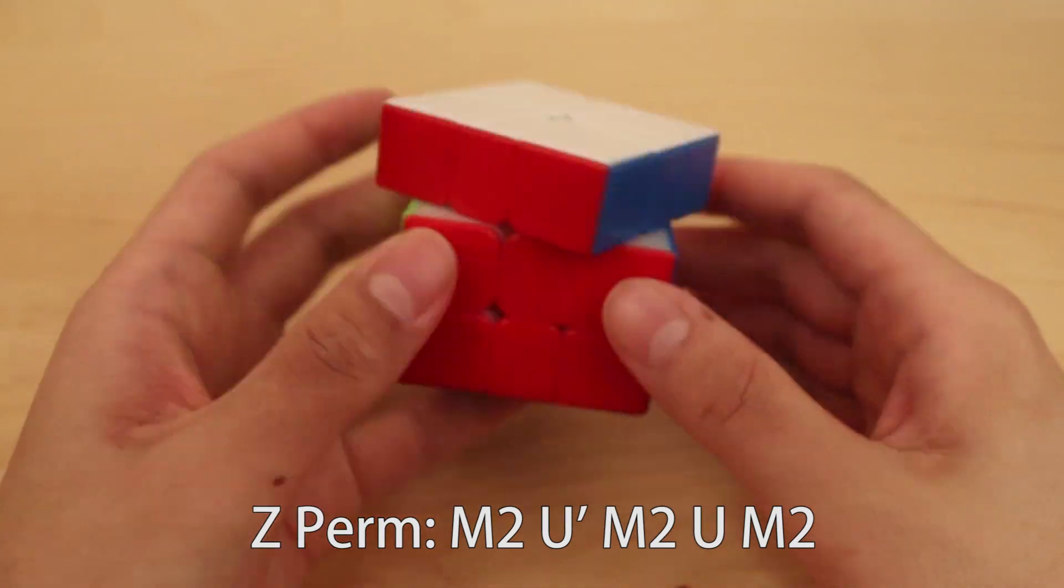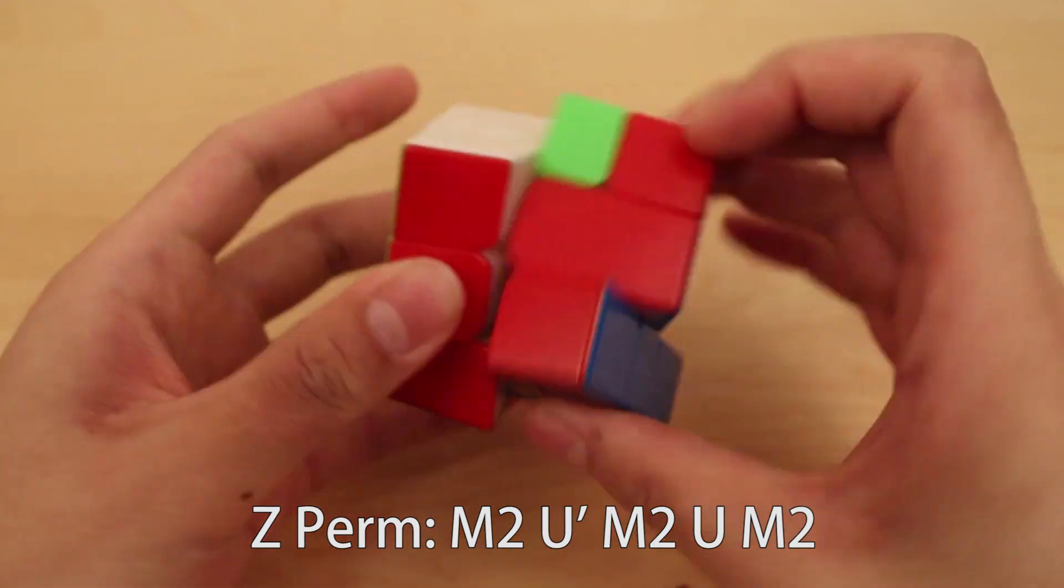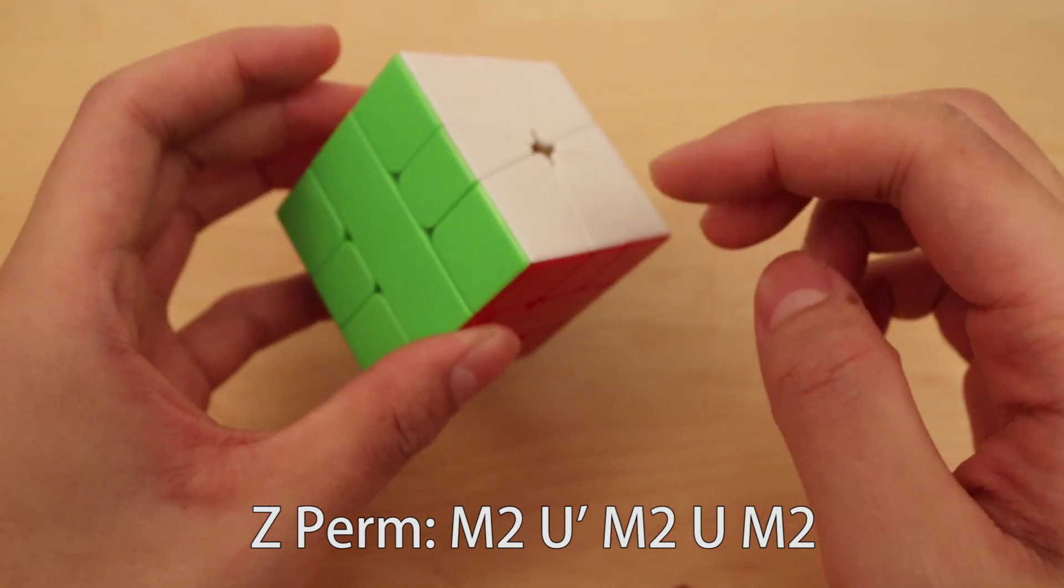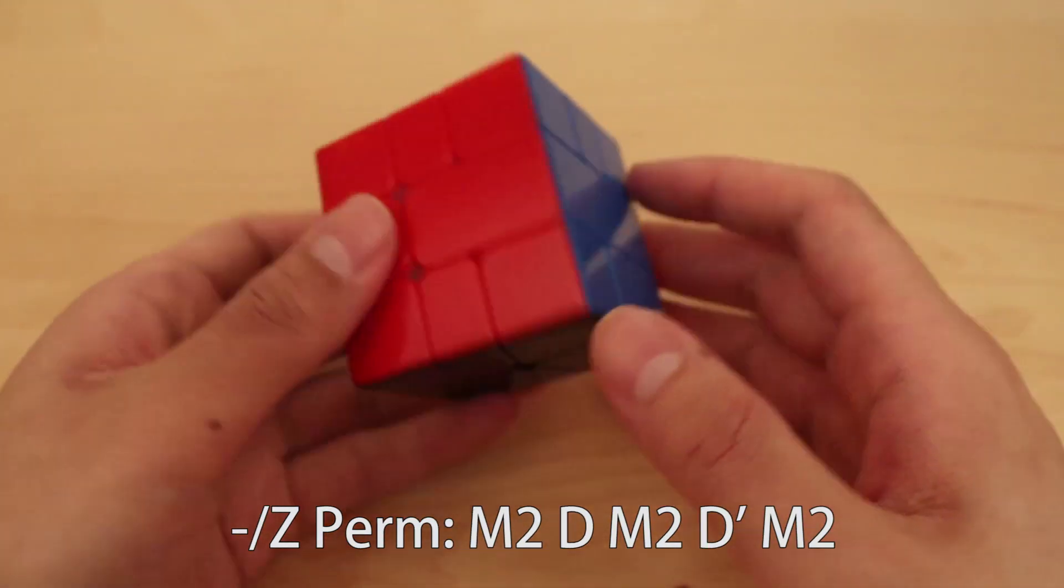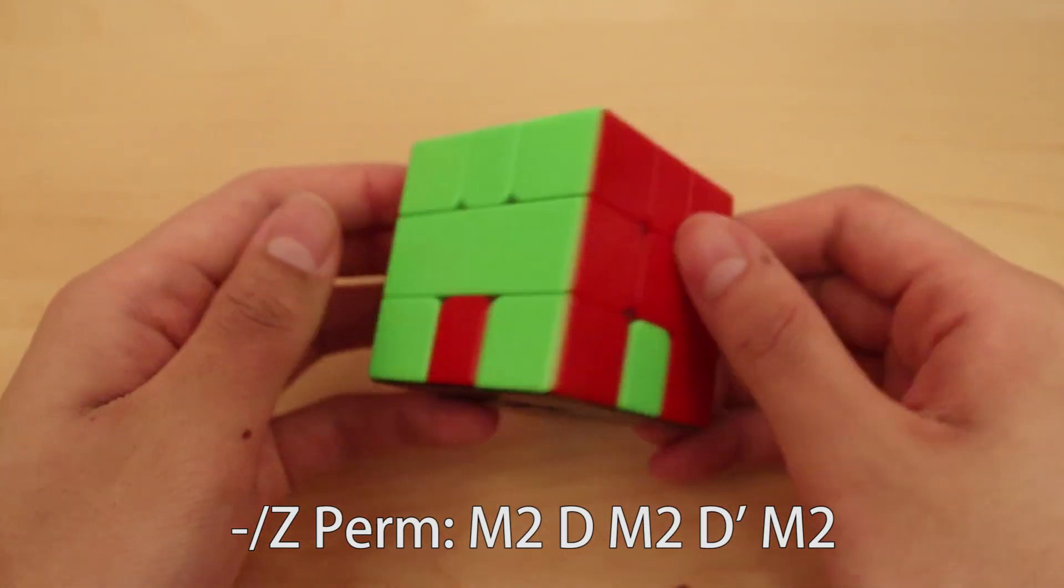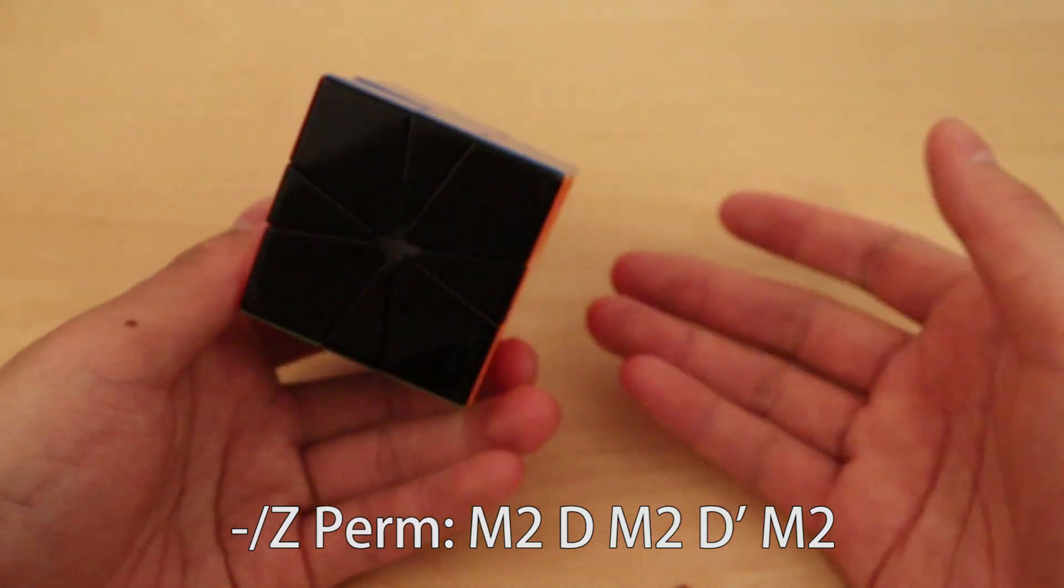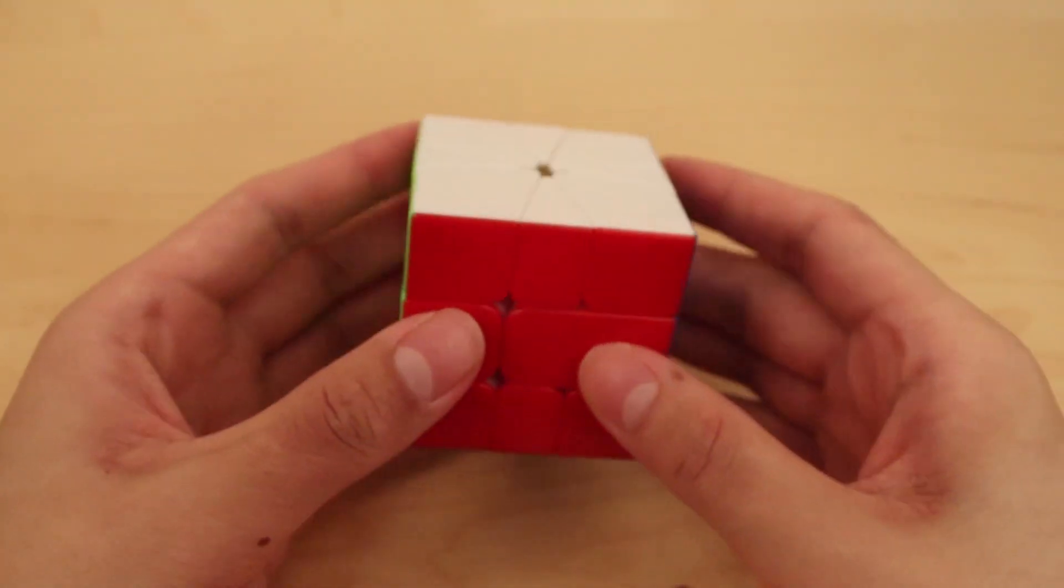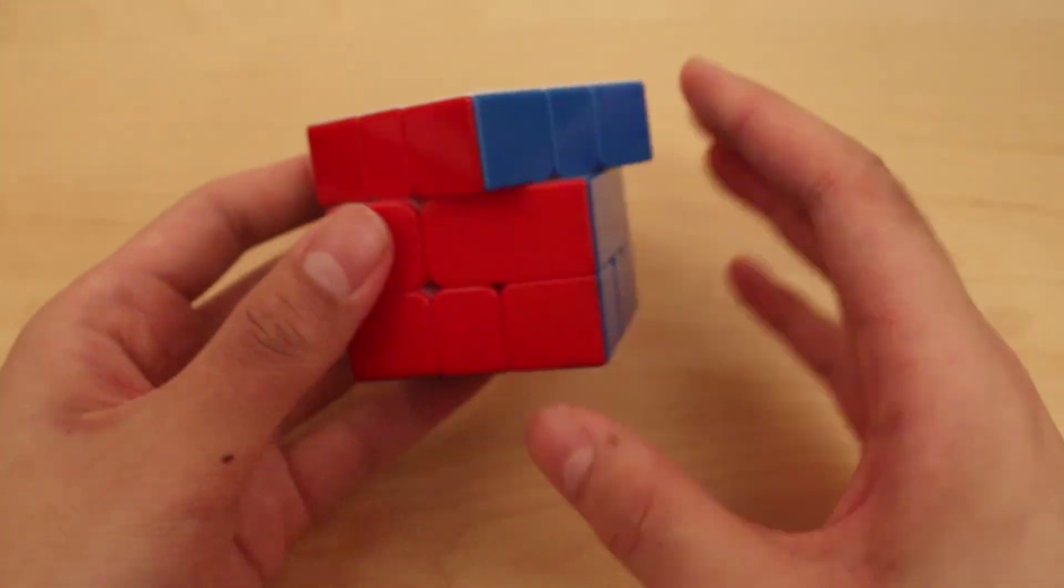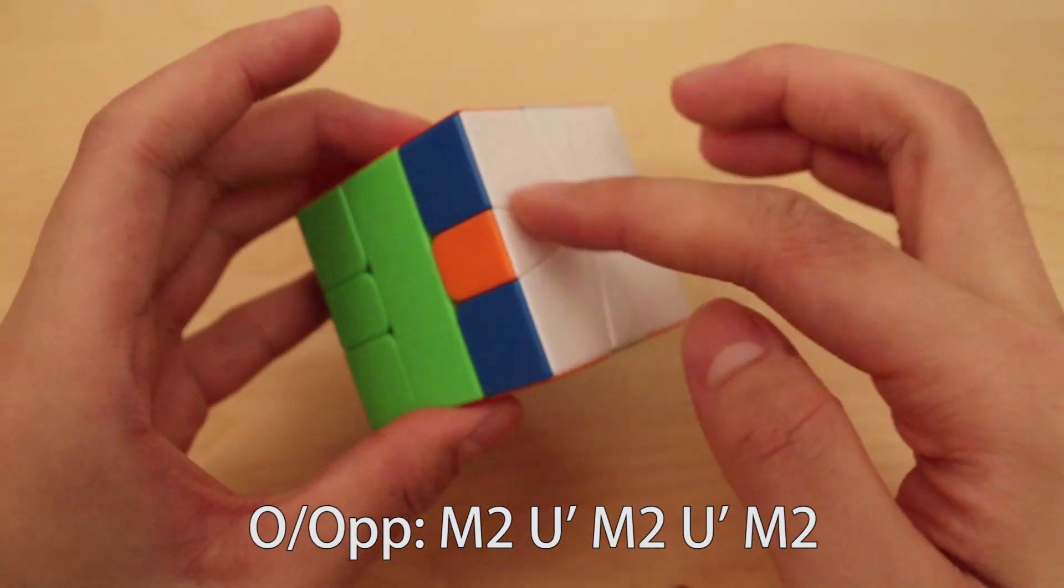Going back to M2s, now you can do Z-perms. So you can do M2, U prime, M2, U, M2. That was a Z-perm. Again, you can do the same with the bottom. So you're just doing M2s in between every U or D move, and that was a Z-perm. Z-perms, you go one direction and back. If you go one direction the whole way, then you get O-op.